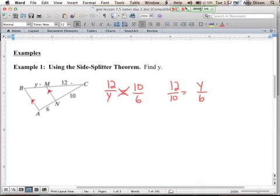We're going to cross-multiply here, we get 10Y equals 12 times 6, we get 72. Divide both sides by 10, and we will get Y equals 7.2. And that is how you use this side splitter theorem.